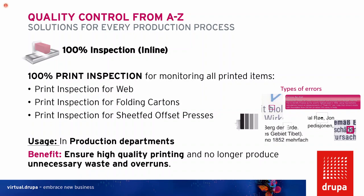The usage is in the production department. The big benefit is that you can check every printed item, ensuring high quality, and eliminating unnecessary waste and overruns — because inspection systems have the possibility to count every item, so that you have, for example, a 3% overrun and can stop your job when you finish your 10,000 sheets.